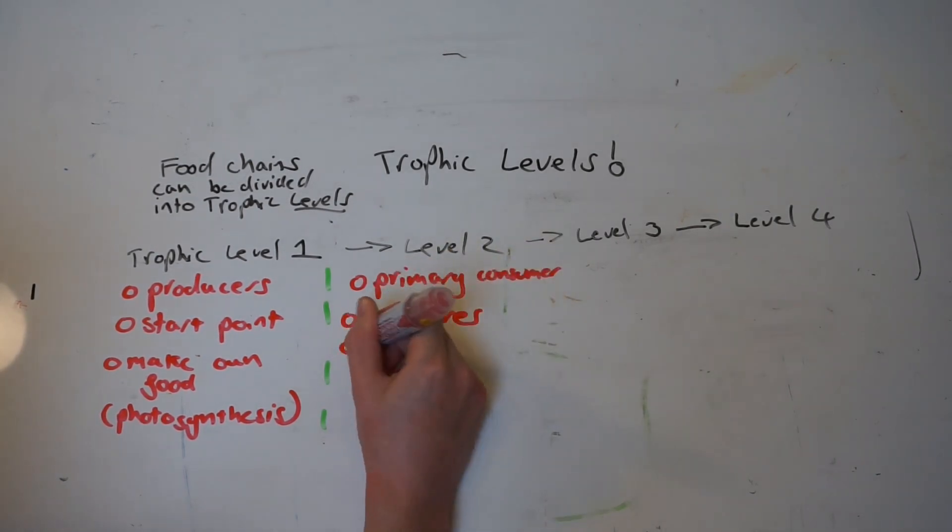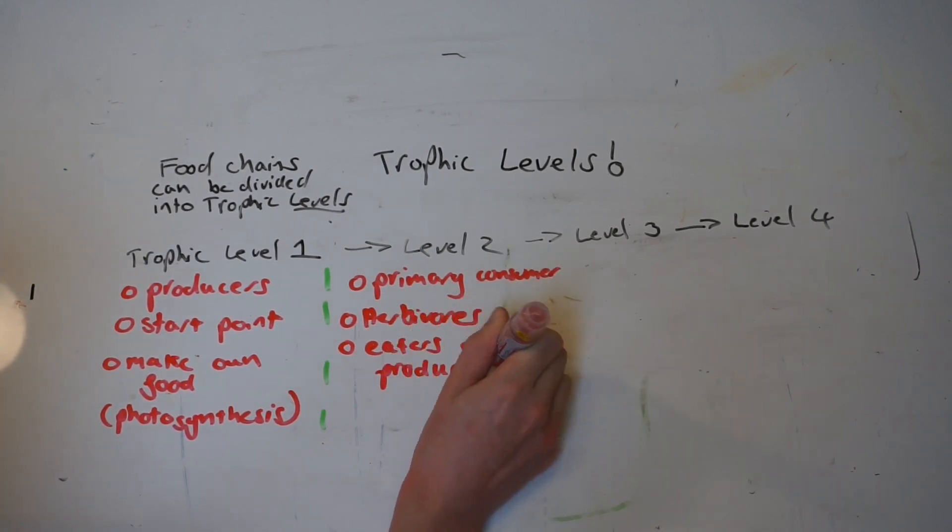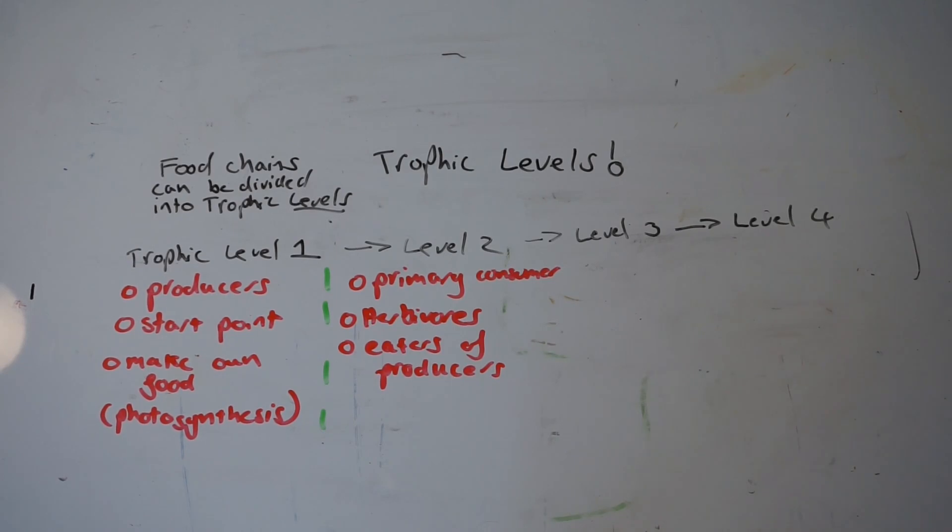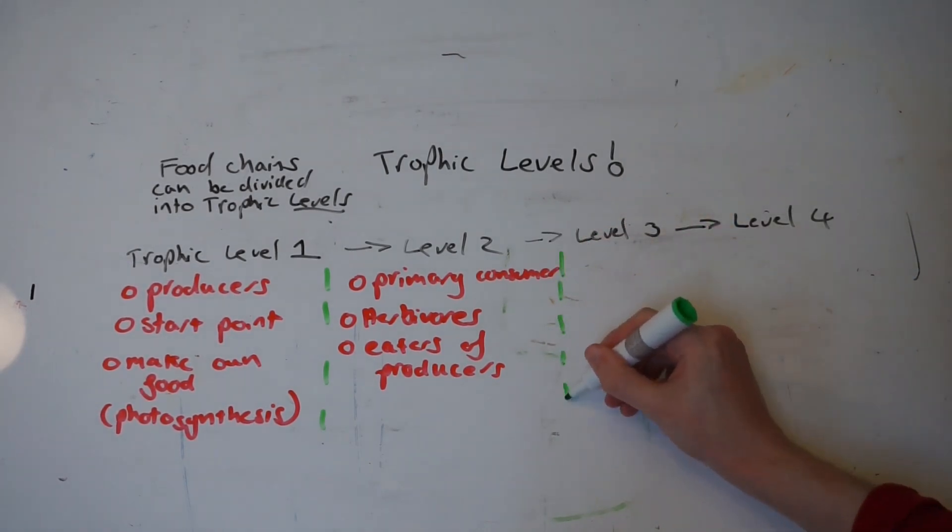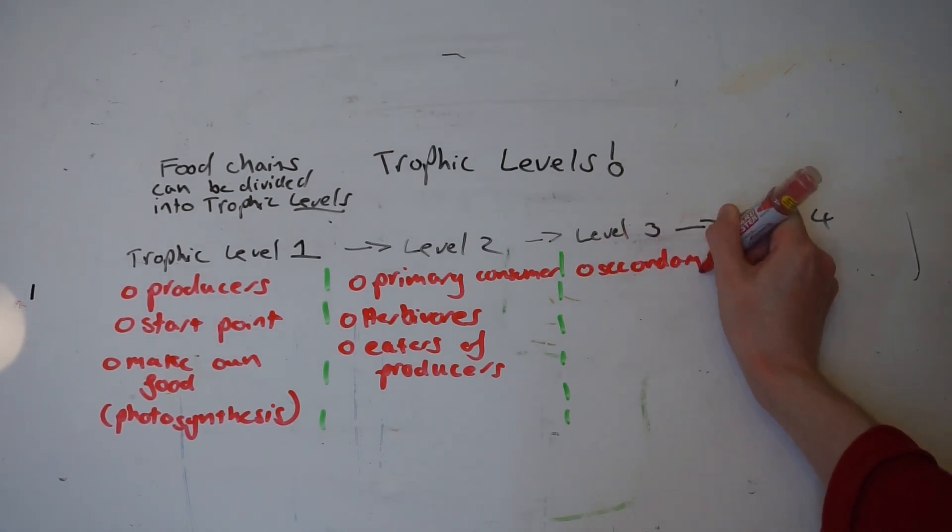Moving on to trophic level three, which we call secondary consumers. These tend to be carnivores. They eat the primary consumers, which were generally herbivores. Carnivores are meat eaters; they eat the meat of other organisms.